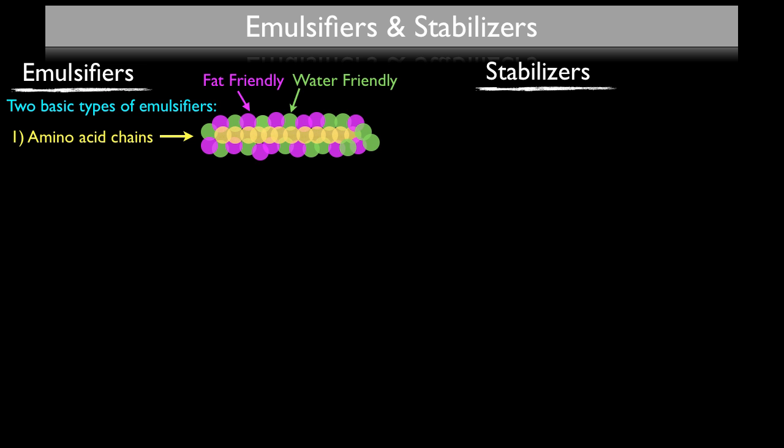When these amino acid chains link together and form larger chains, they create what we call proteins. There are some proteins that will act as emulsifiers, with the most common one being casein, which is commonly found in egg yolks and milk products.